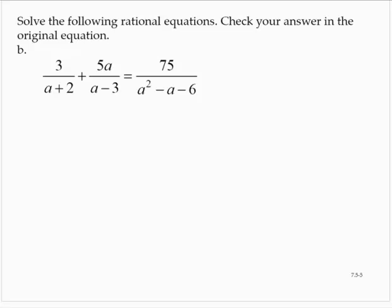Exercise B. 3 over a plus 2 plus 5a over a minus 3 is equal to 75 over a squared minus a minus 6. Well, that's that last denominator there, that a squared minus a minus 6. I want to write that in factored form, and it factors as a plus 2 by a minus 3.